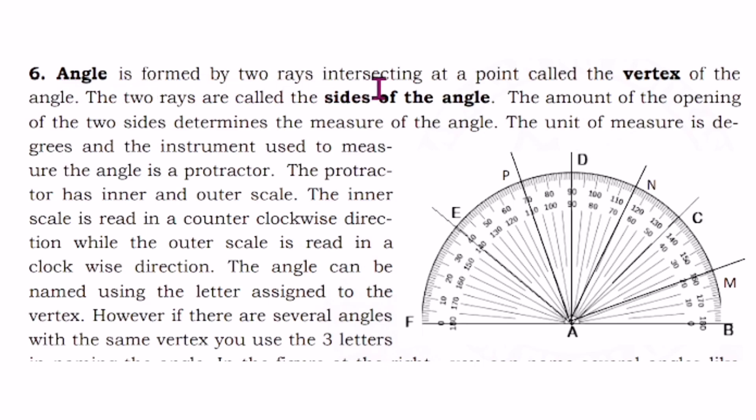An angle is formed by two rays intersecting at a point called the vertex of the angle. The two rays are called the sides of the angle. The amount of the opening of the two sides determines the measure of the angle.